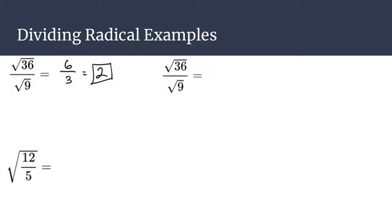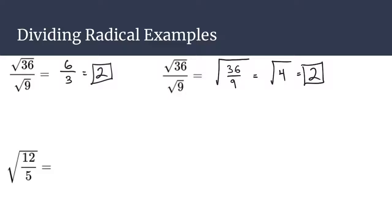You could have thought about this slightly differently. You could use the property to write it as the square root of a single fraction — 36 over 9. And 36 over 9 inside there reduces to just 4. When you take the square root of 4, you get 2 again. So you see that your answers are the same no matter which method you use.